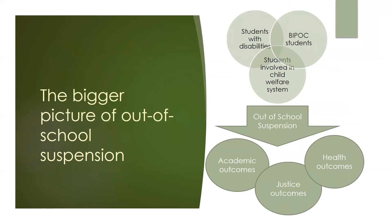So why should you care about out-of-school suspension? Why is all of this information important to know? Out-of-school suspension is part of a larger systemic issue. The groups who are at higher risk for out-of-school suspension—students with disabilities, BIPOC students, students who are involved in the child welfare system, and students who belong to more than one of those groups—are also at a higher risk for the negative outcomes of out-of-school suspension. Two related theories help us understand the way that these factors are connected: school push-out and the school-prison nexus.